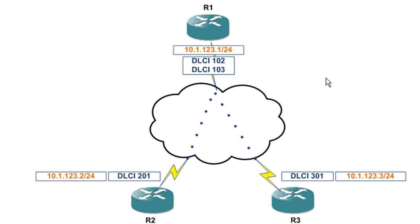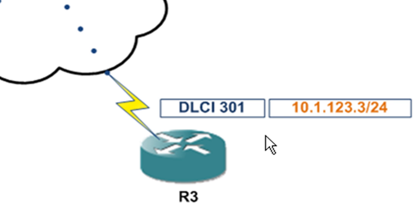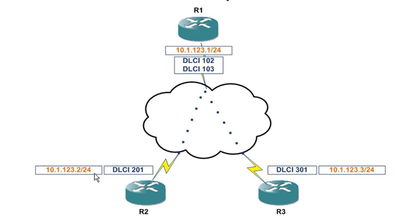We're going to have R1 — that's going to be our hub, our corporate headquarters. Then we've got R2 and R3, which will be our remotes or spokes. We're looking at the DLCI assignment. We have an access circuit, full T1, hitting the frame relay cloud for R3, and everything here is going to go on DLCI 301. The DLCI is the layer 2 addressing scheme for frame relay. We've been assigned 10.1.123.3/24 as our IP address. We only have one path, so we're going to send everything on DLCI 301. Same thing with R2 — it's going to go out DLCI 201.